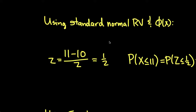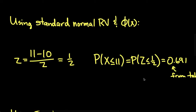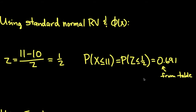To convert x to a standard normal random variable, we subtract the mean. So we want to find the probability that x is less than or equal to 11. We take 11, subtract the mean which is 10, and divide by the standard deviation which is 2. And when I do that, I get 1/2. So the probability that x is less than or equal to 11 is the probability that z, which is a standard normal random variable, is less than or equal to 1/2. Looking this up in a table, I get that this is approximately 0.691.